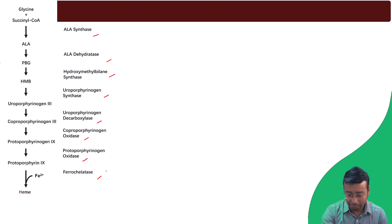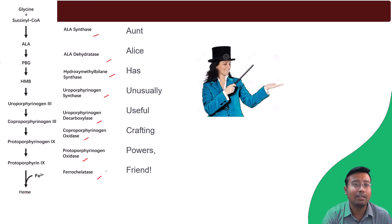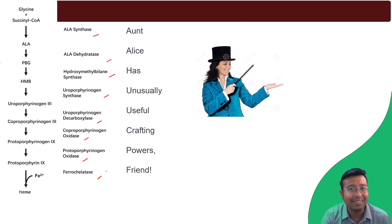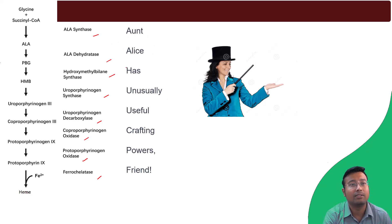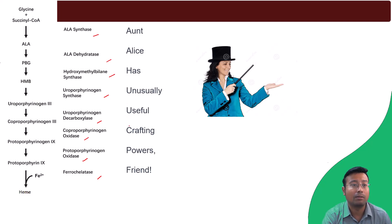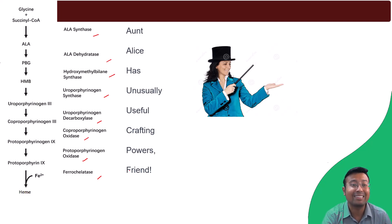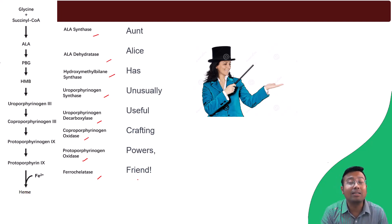To remember the enzymes, here is another mnemonic: 'Aunt Alice Has Unusually Useful Crafting Powers Friend' — it's about Aunt Alice performing a magic trick. So you can match: ALA synthase, ALA dehydratase, Hydroxymethylbilane synthase, Uroporphyrinogen synthase, Uroporphyrinogen decarboxylase, Coproporphyrinogen oxidase, Protoporphyrinogen oxidase, and lastly Ferrochelatase. These mnemonics help you remember them in sequence.